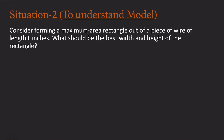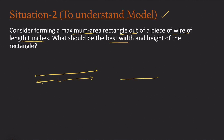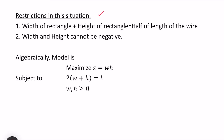In the second situation, I want to understand modeling, which will lead us into more mathematics and constructing a mathematical model in optimization. Consider forming a maximum-area rectangle out of a piece of wire of length L inches. What should be the best width and height? The wire of total length L is bent to form a rectangle with a given width and height. The question is: what dimensions maximize the area?